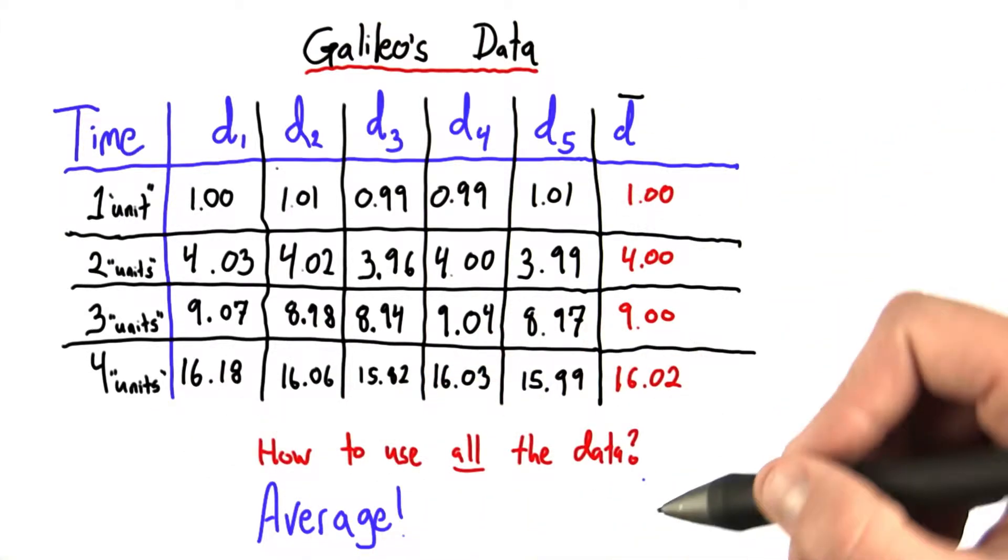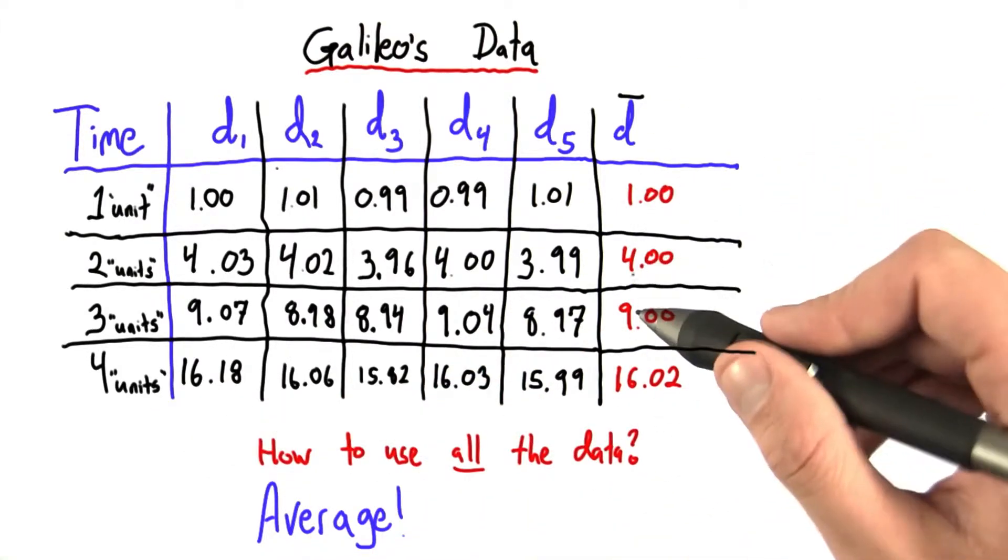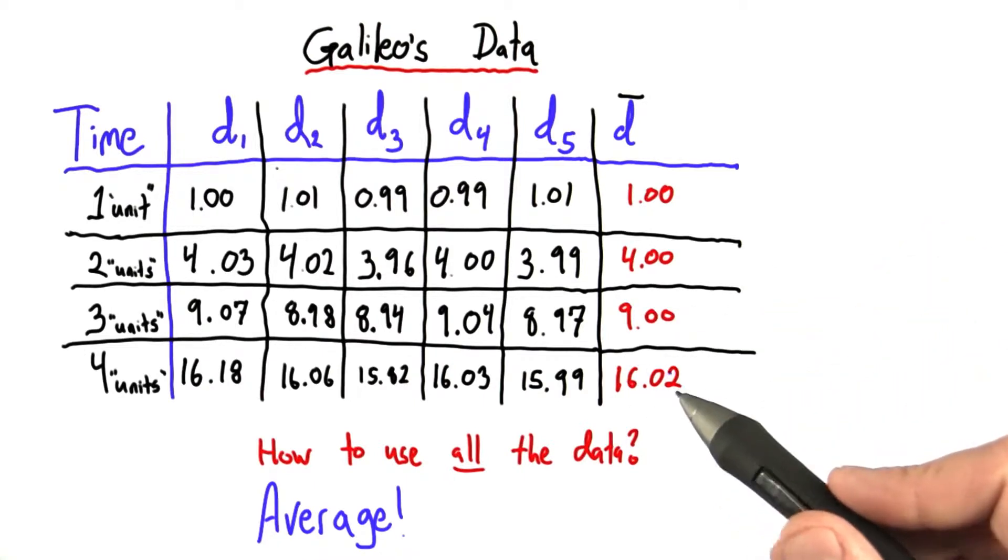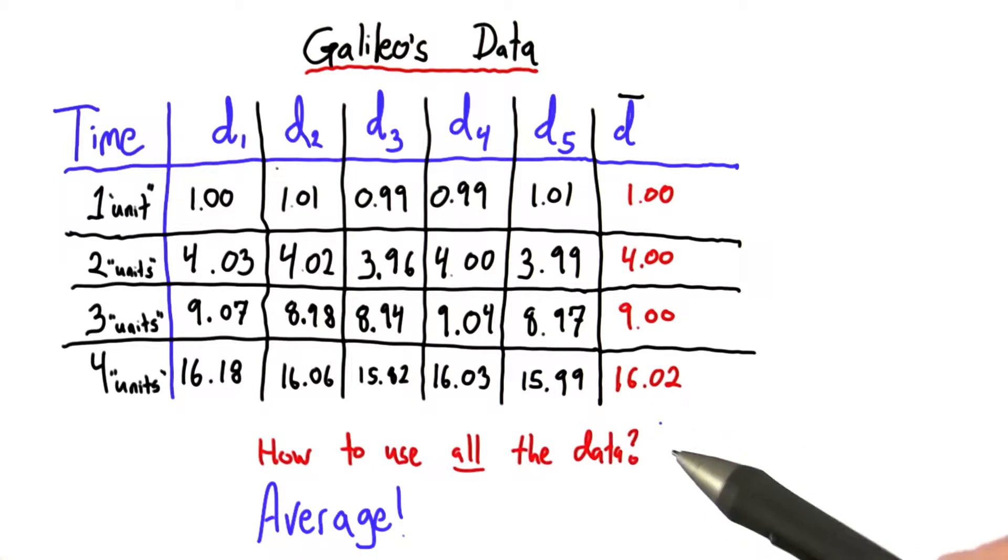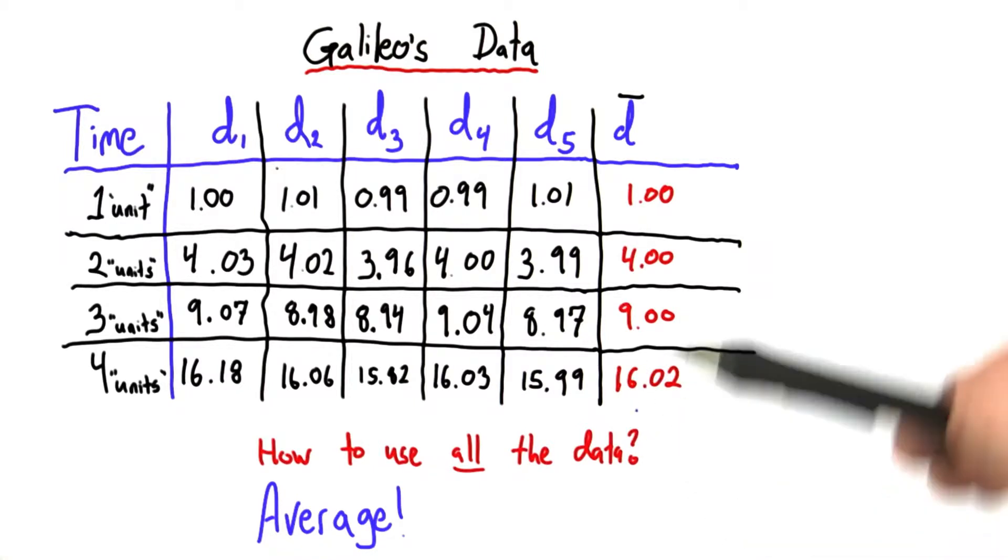Now, look at this data. Isn't this beautiful? 1, 4, 9, 16, .02 though. Well, that .02 is sort of a bummer, but let's pretend it was just 16 for a second and see if there's any pattern.